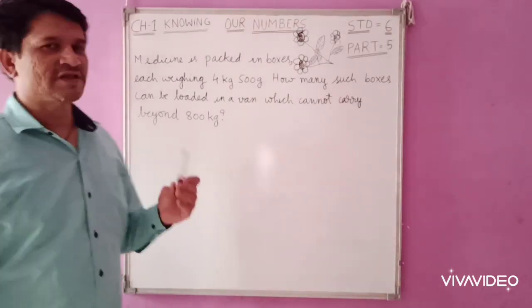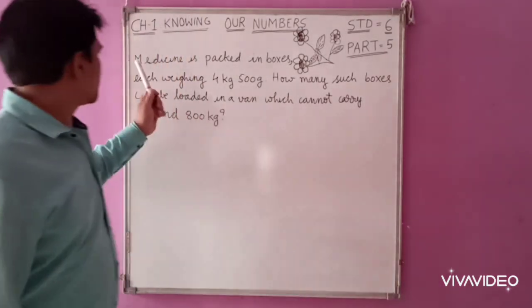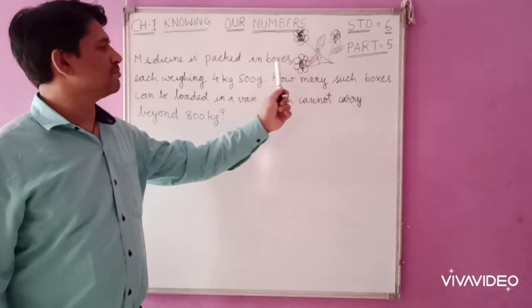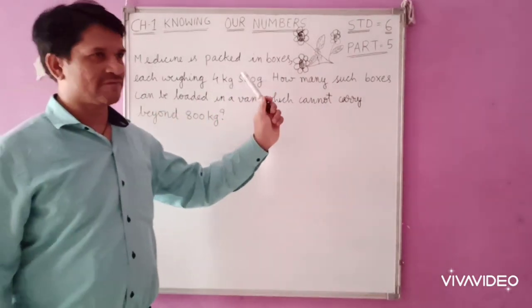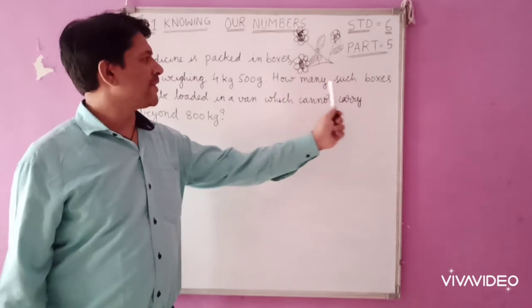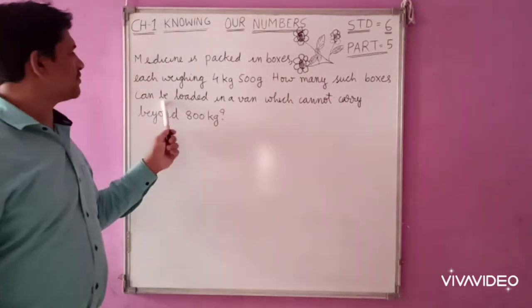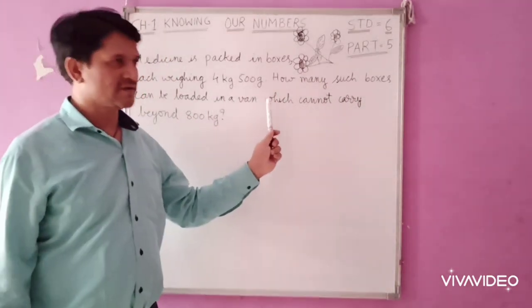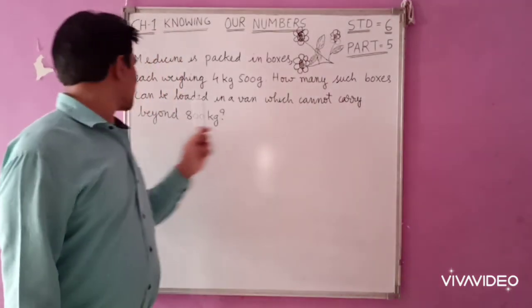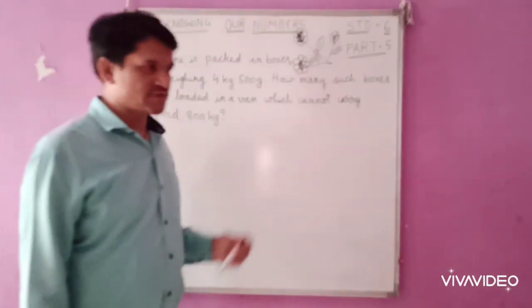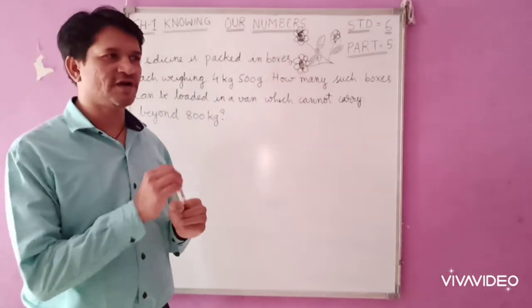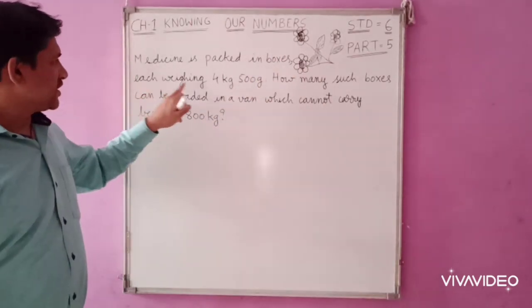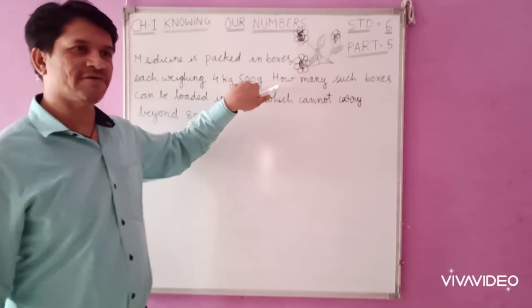Now we will continue with the next question. Here medicine is packed in boxes, each weighing 4 kg 500 grams. How many such boxes can be loaded in a van which cannot carry beyond 800 kg?